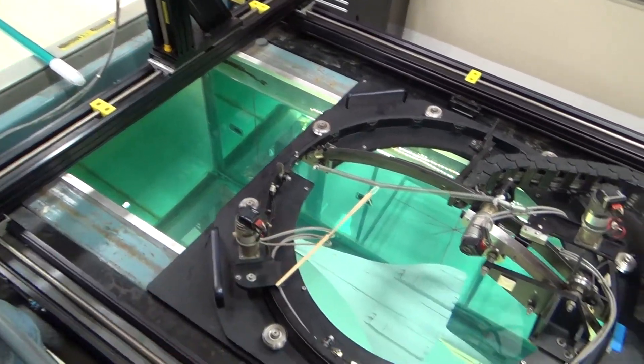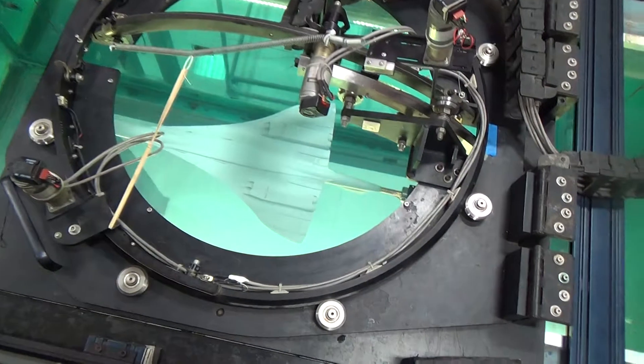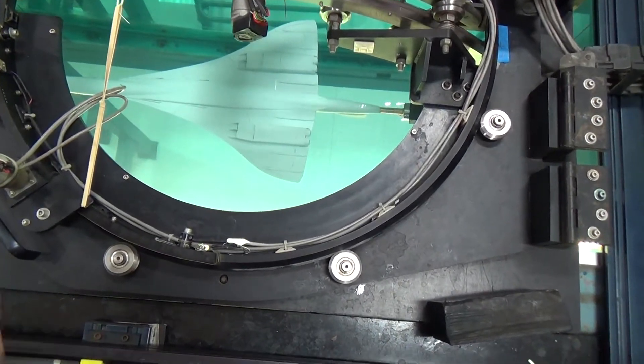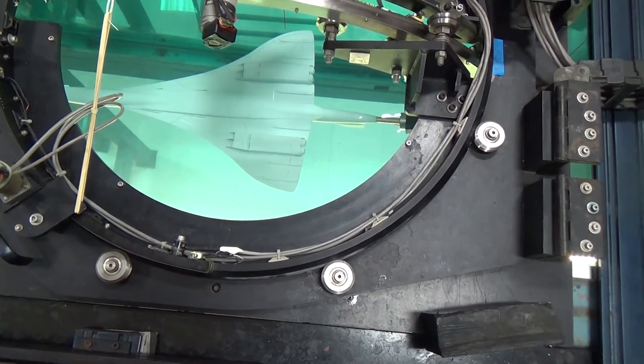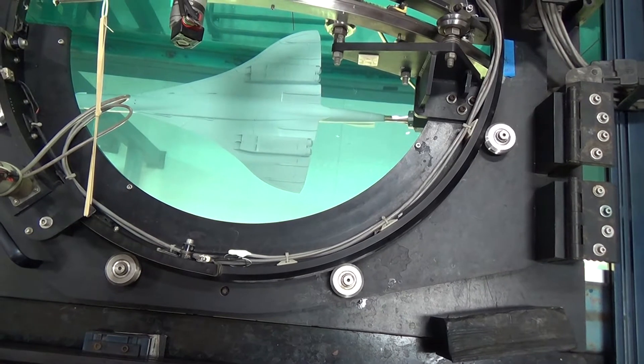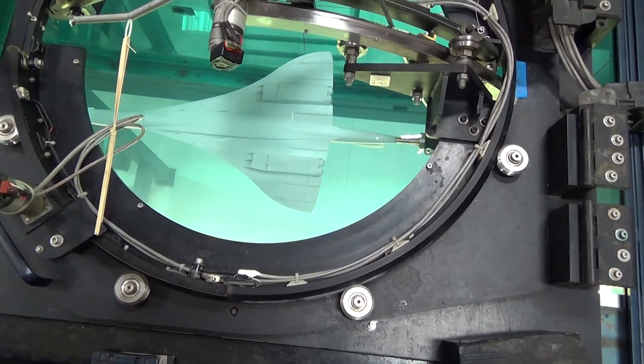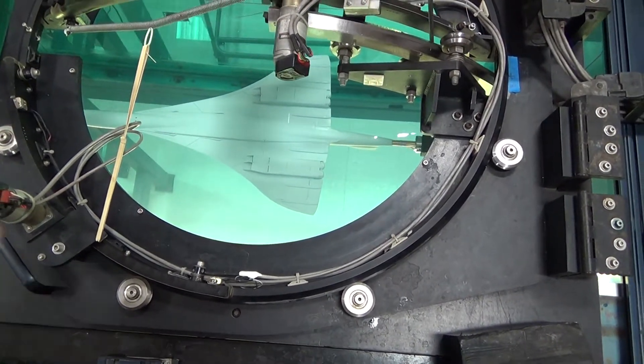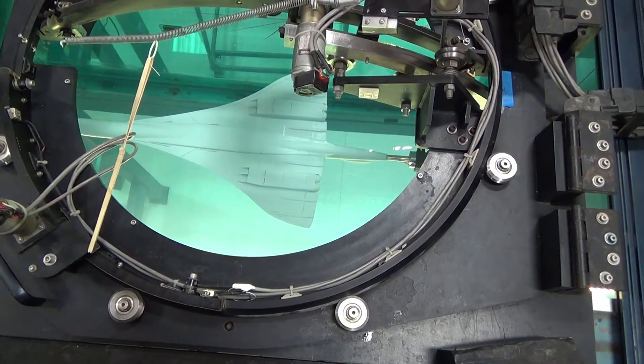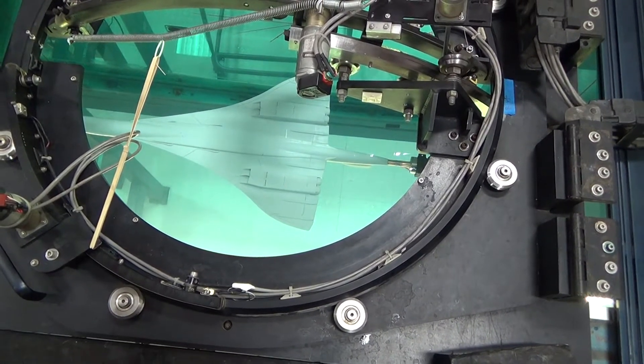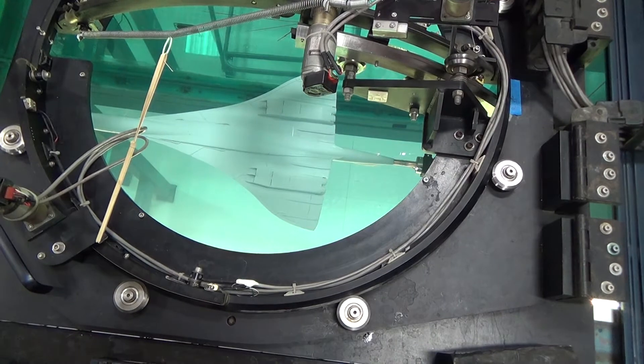If you look down in the tunnel there at the underside of the Concorde, we also have the ability to suction the inlets, because in many cases we've found that power setting and inlet flow rate have an effect on the flow structures of vortices that are on the upper surface of the wing.